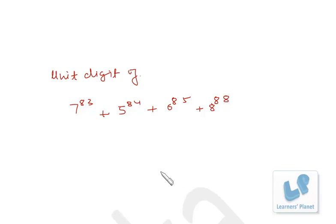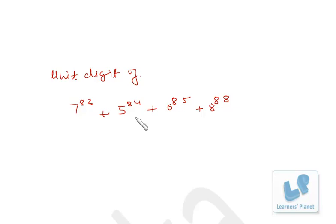Hello friends. In this video I am solving a query sent by a student. We have to find out the unit digit of the expression: 7 raised to 83, plus 5 raised to 84, plus 6 raised to 85, and 8 raised to 88.